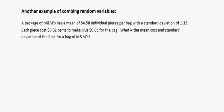So here we're going to look at another example for combining random variables and we're looking at M&Ms. The package of M&Ms has a mean of 54.58, and that's the mean number of pieces in a bag with a standard deviation of 1.32 pieces.